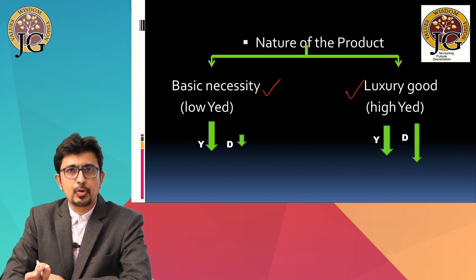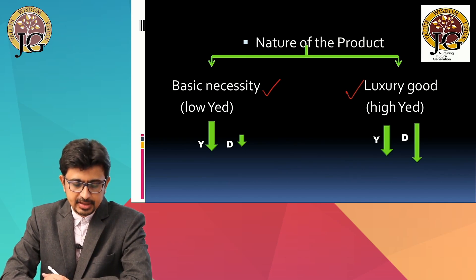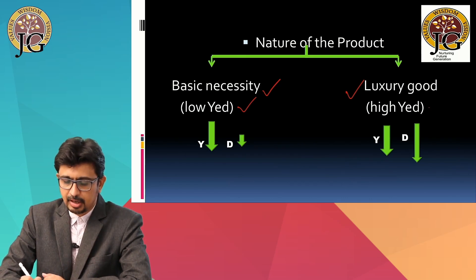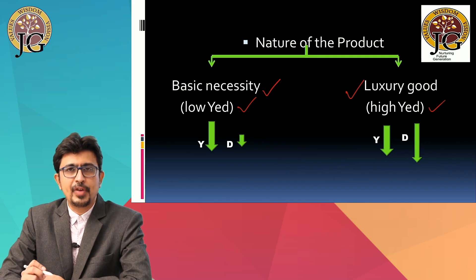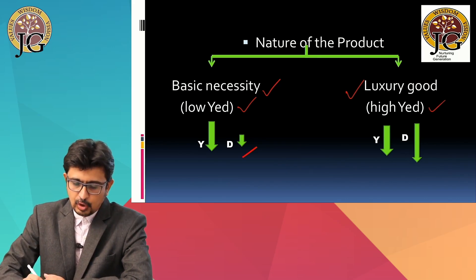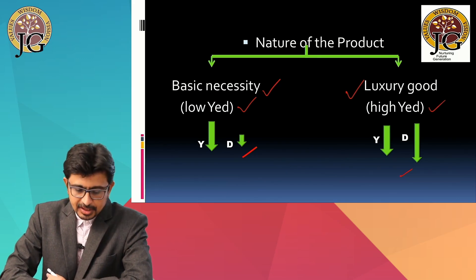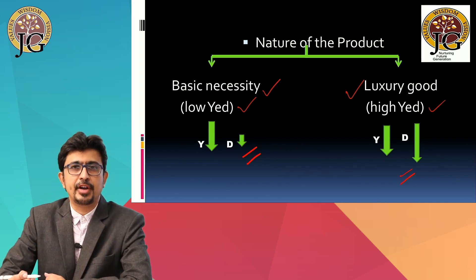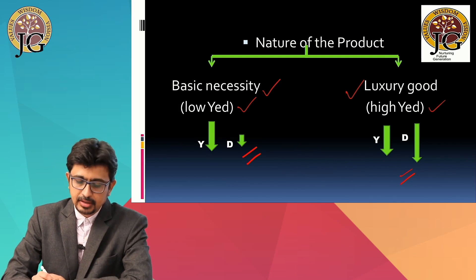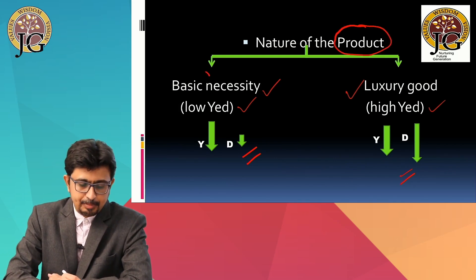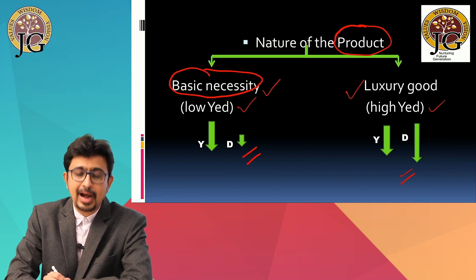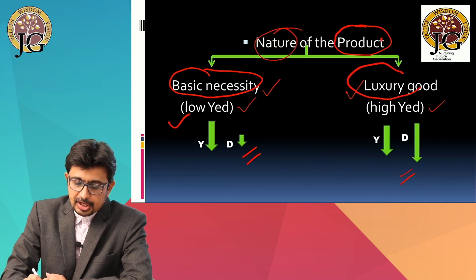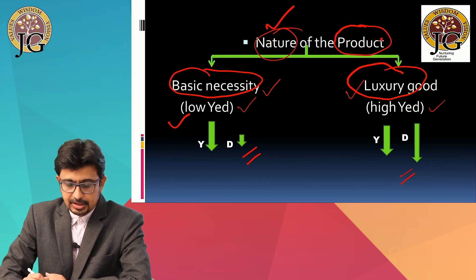In the case of basic necessities, the income elasticity of demand will be less, whereas in the case of luxury goods, the income elasticity of demand will be very high. Whether the elasticity will be less or more ultimately depends on the nature of the product. If the product is a basic necessity, the elasticity will be low. And if the product is a luxury good, the elasticity will be high.